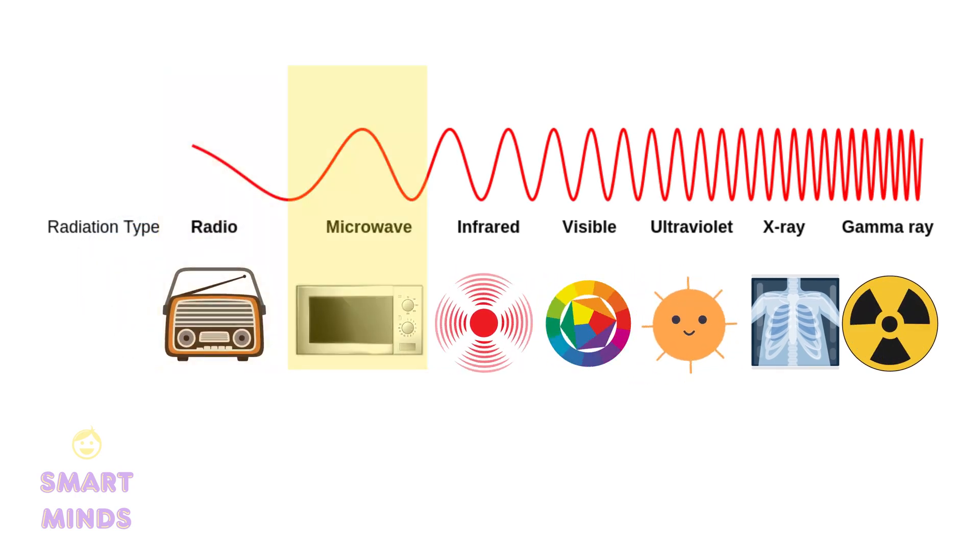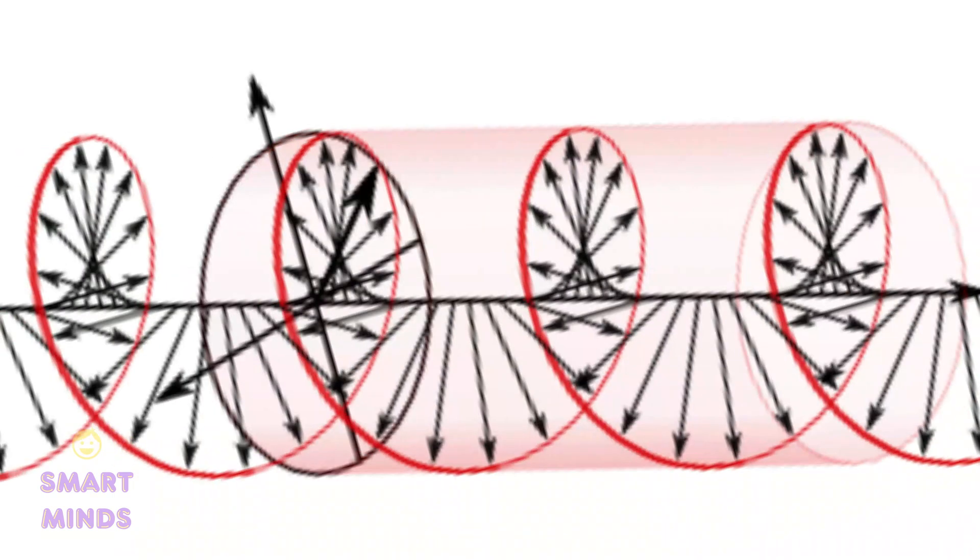The characteristics of each wave determine its position on the spectrum, which is divided into sections based on wavelength and frequency.